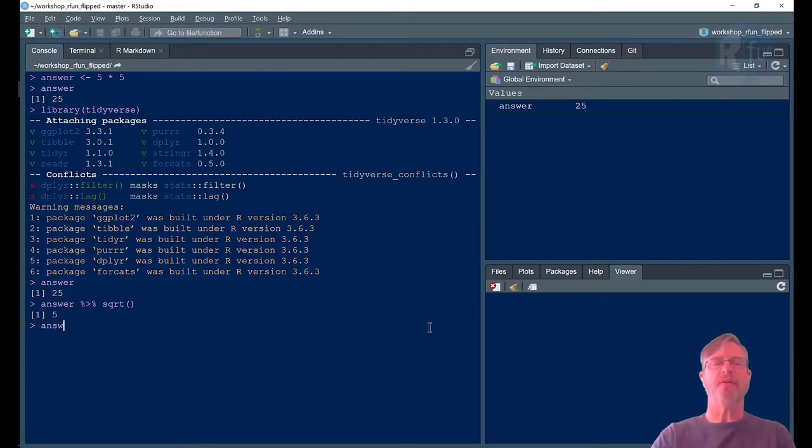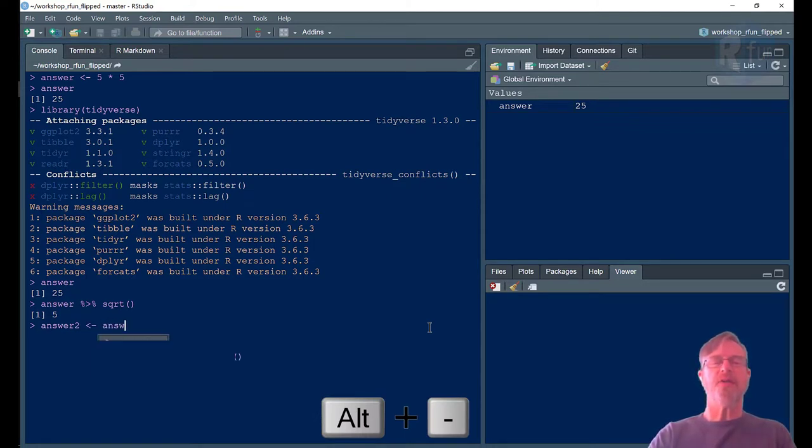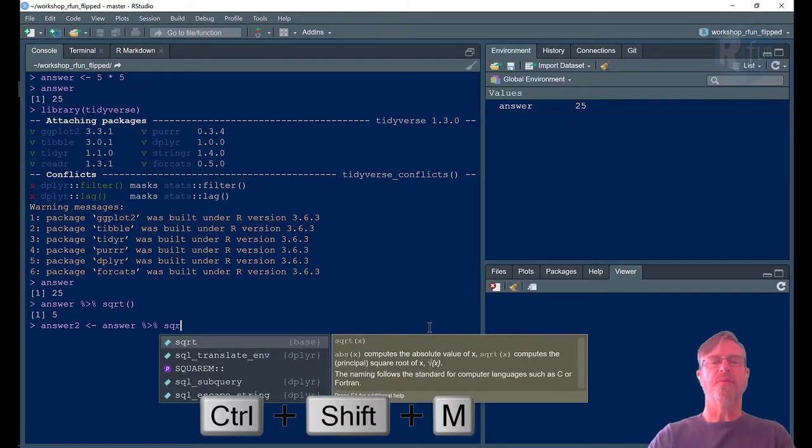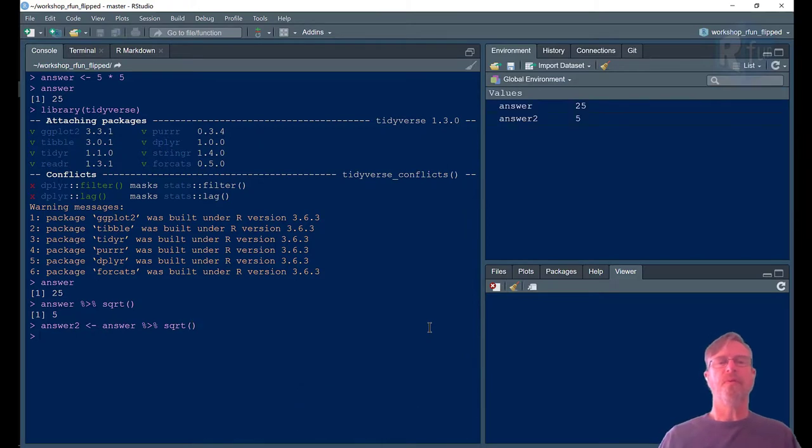But if I wanted to keep that answer around, I would have to assign it. Answer 2 gets value from answer, and then take the square root. Which remember, when you assign it to an object name, you don't automatically get to see the value. If you need to see the value of the object name, just type answer 2.